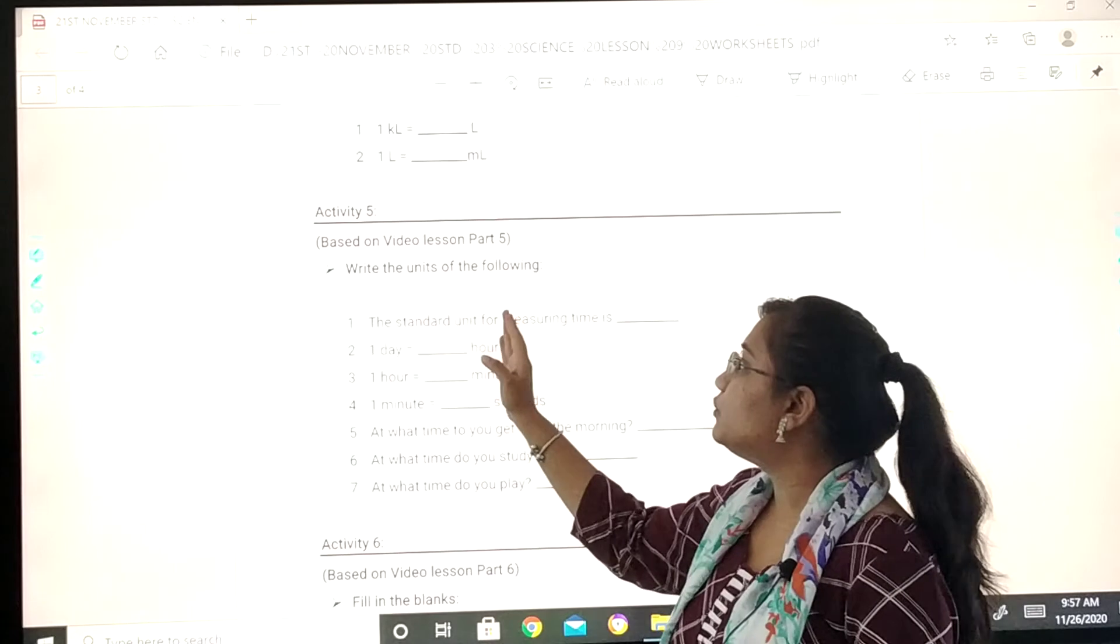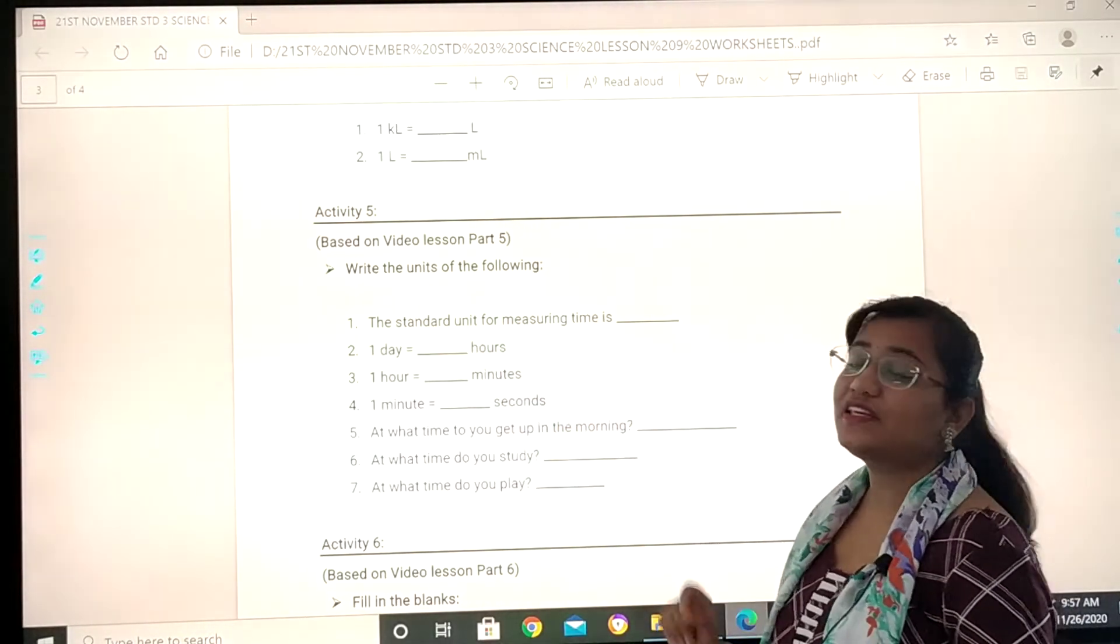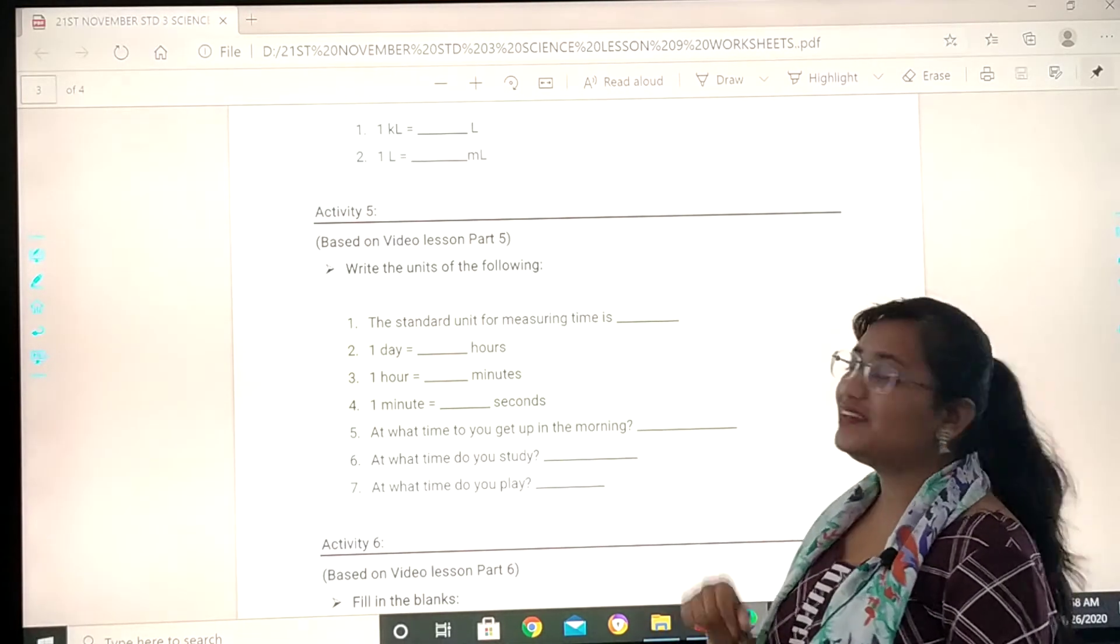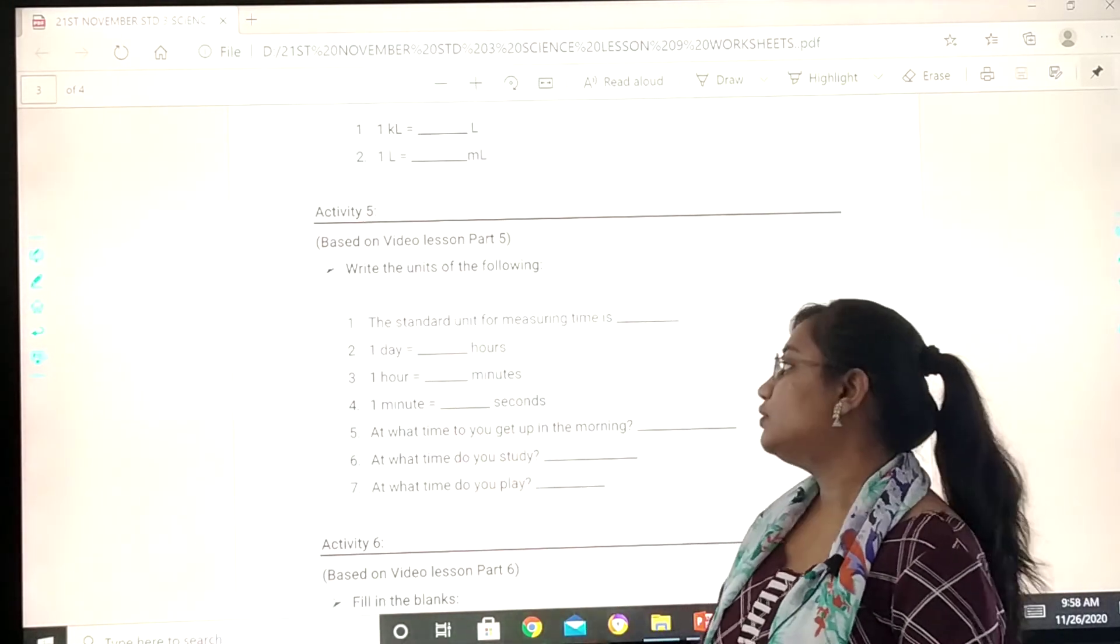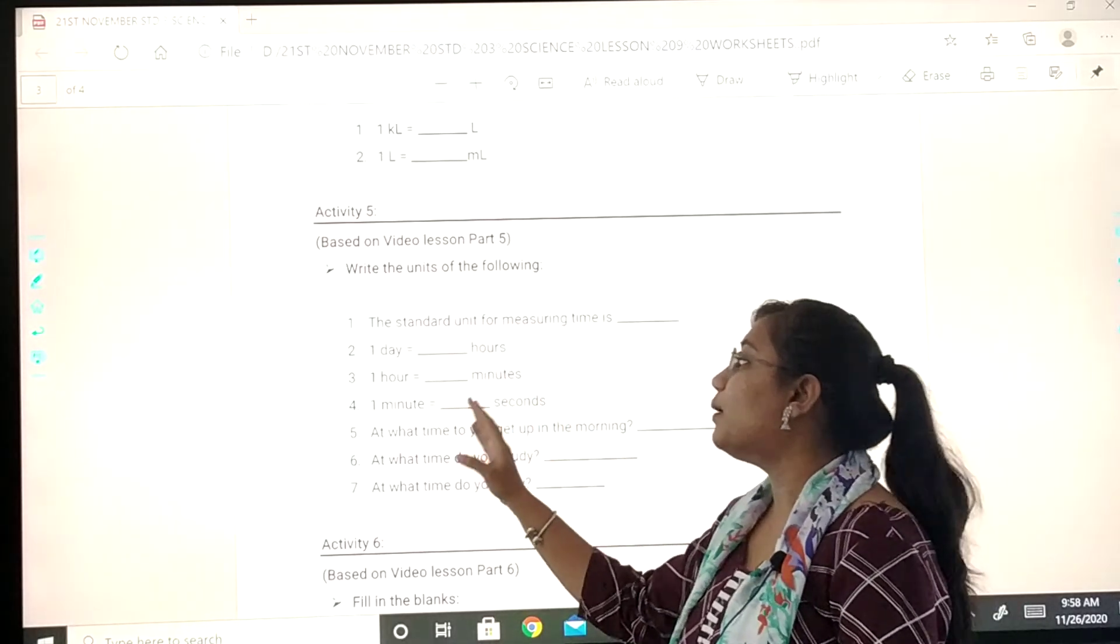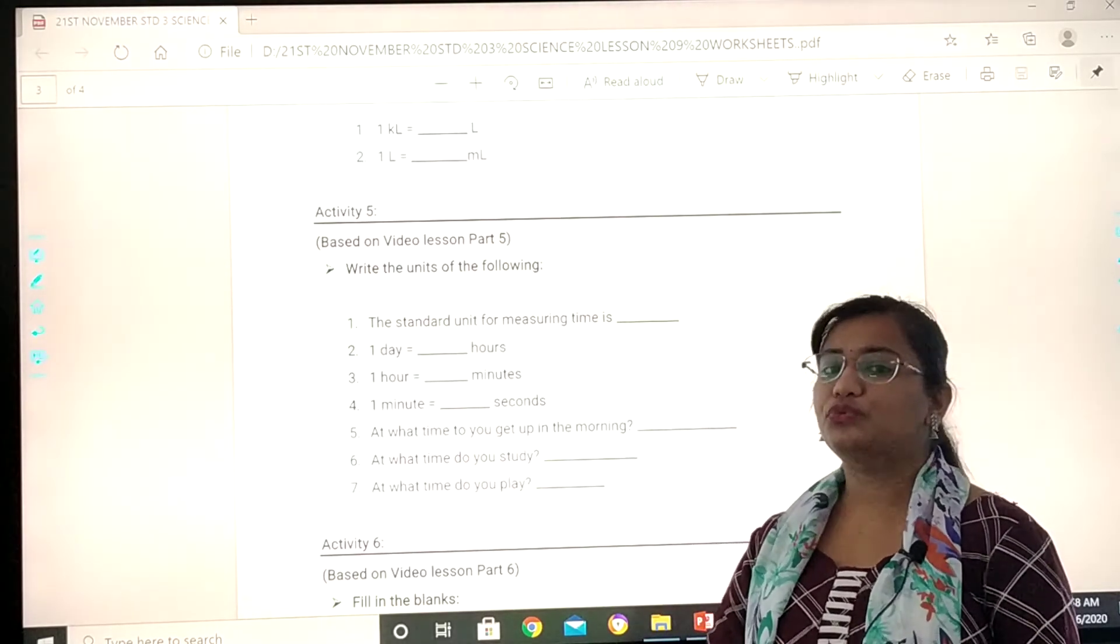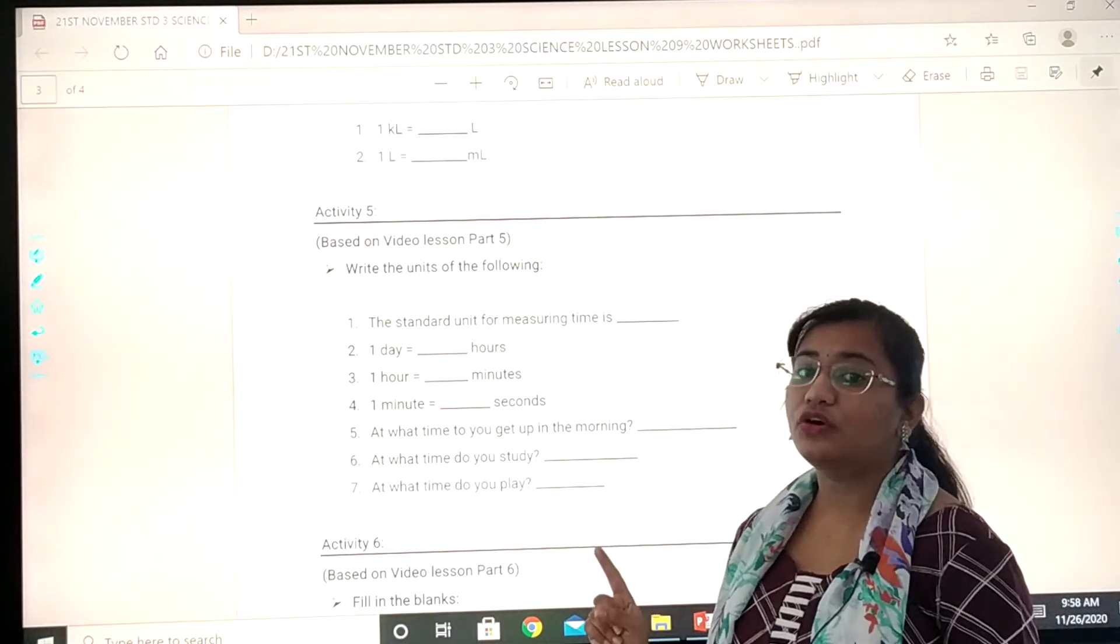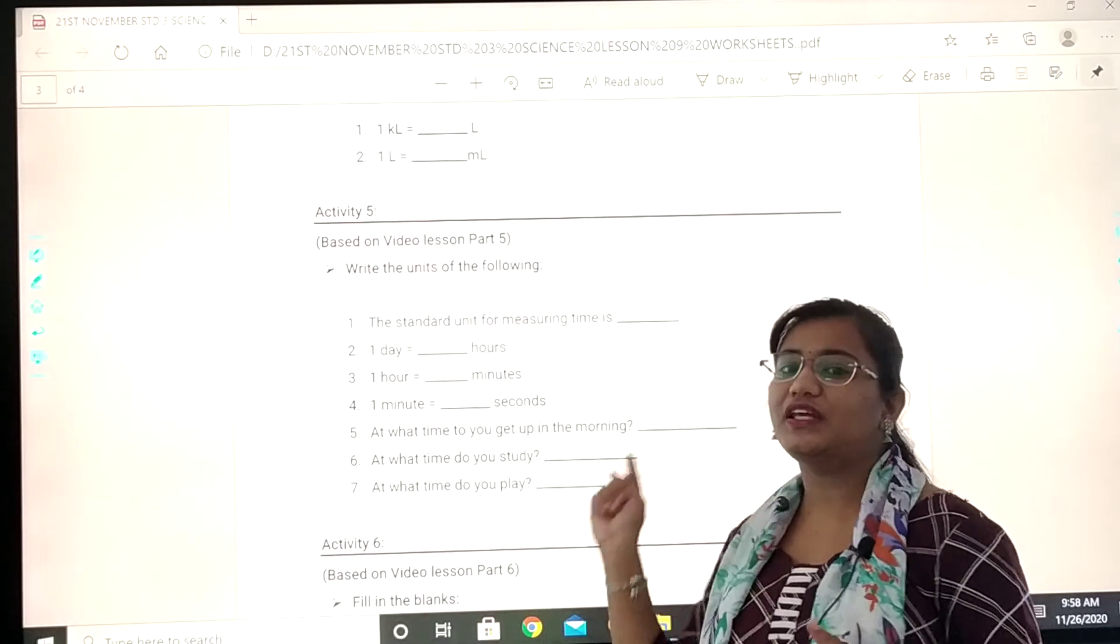Write the units of the following. The standard unit for measuring time is dash. You know it, right? So you will fill in the blank. Then one day equals to dash hour. One hour is equals to dash minutes. One minute is equals to dash seconds. You all know this, right? Go through your textbook. Go through this video. Pause it. Rewind it. Replay it. Okay? And you will know the answers.